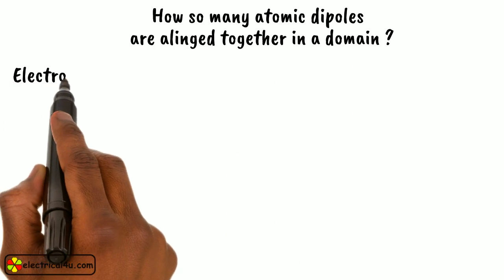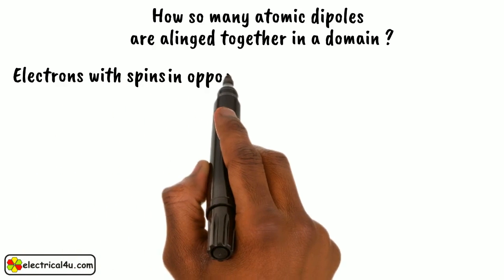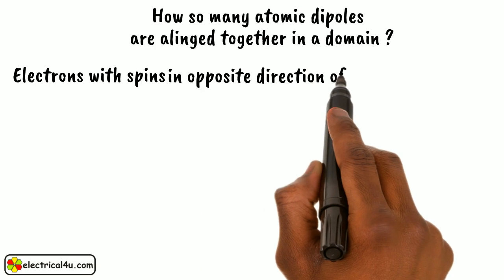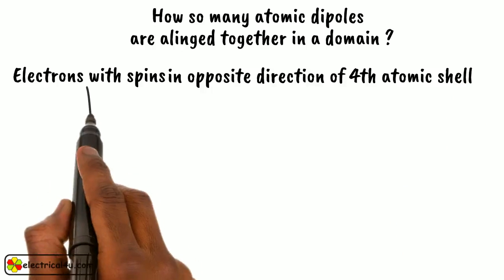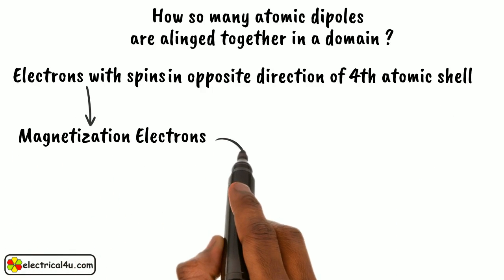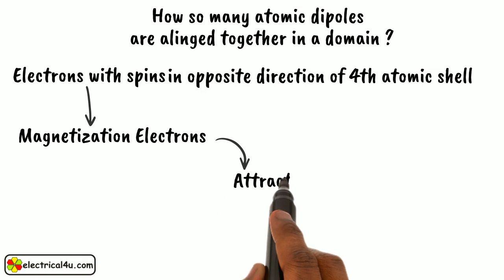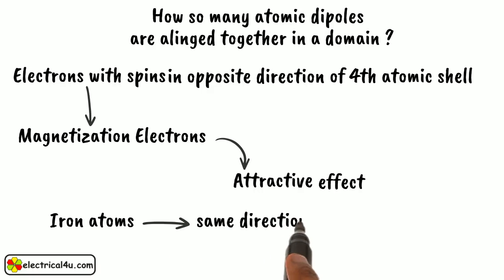This is because other electrons with spins in the opposite direction, mainly in the 4th atomic shell, interact at close range with the magnetization electrons. And this interaction is attractive. Because of the attractive effect of their opposite spins, these 4S shell electrons influence the magnetization electrons of the iron atoms and align them in same direction.